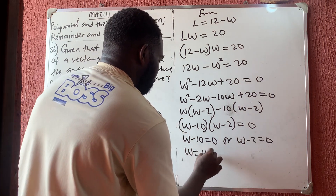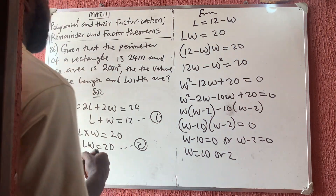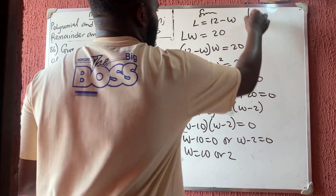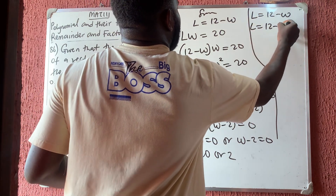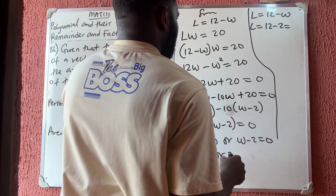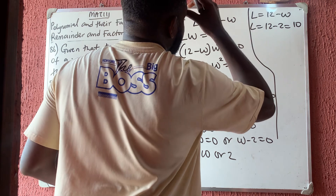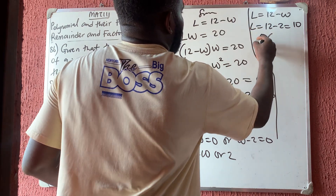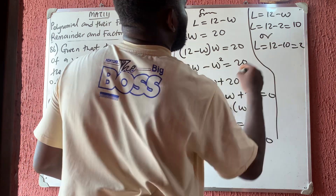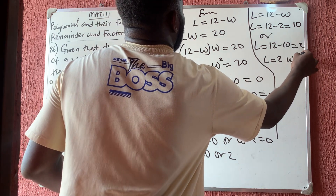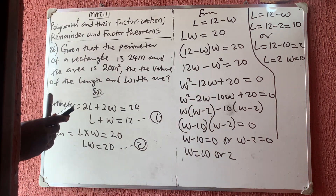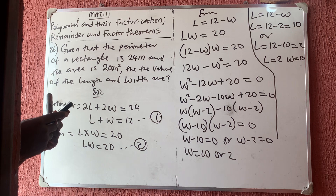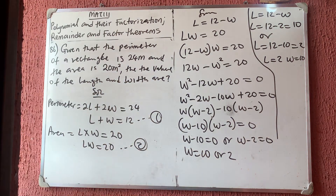So w minus 10 equals zero or w minus 2 equals zero, meaning w equals 10 or w equals 2. Using l equals 12 minus w: when w equals 2, l equals 10; when w equals 10, l equals 2. So 10 and 2 is the correct option — option B is correct.